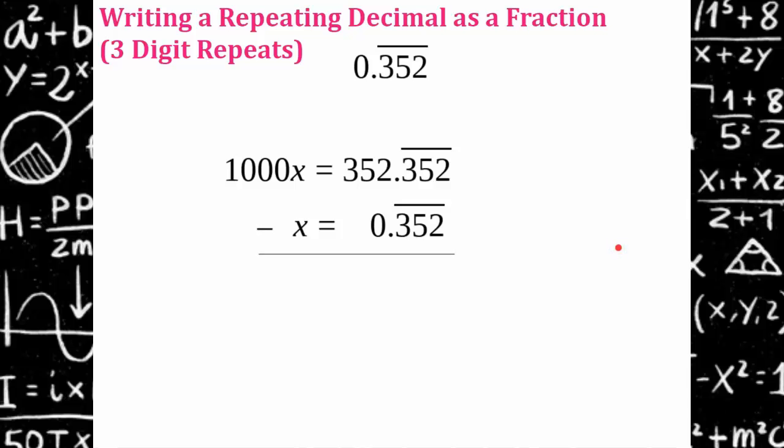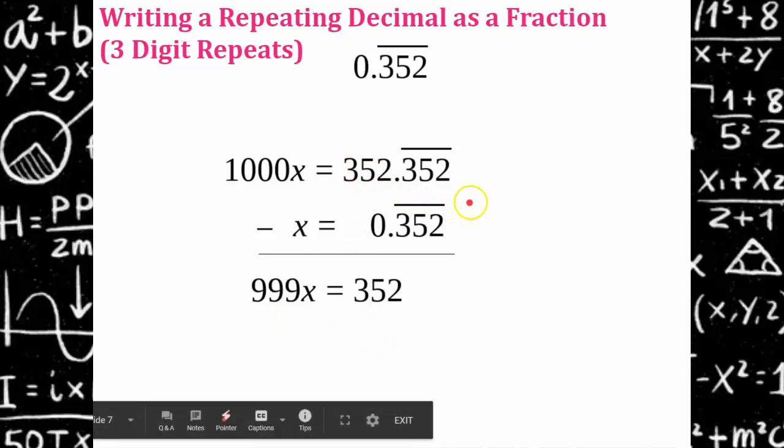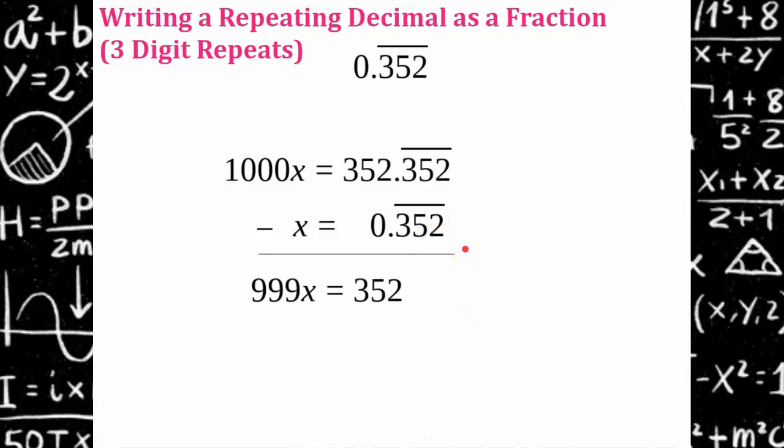Let's subtract. 1000x minus x gives me 999x. And 352 point 352 repeating subtracting the point 352 repeating gives me 352. Divide both sides by 999. And you get 352 over 999.